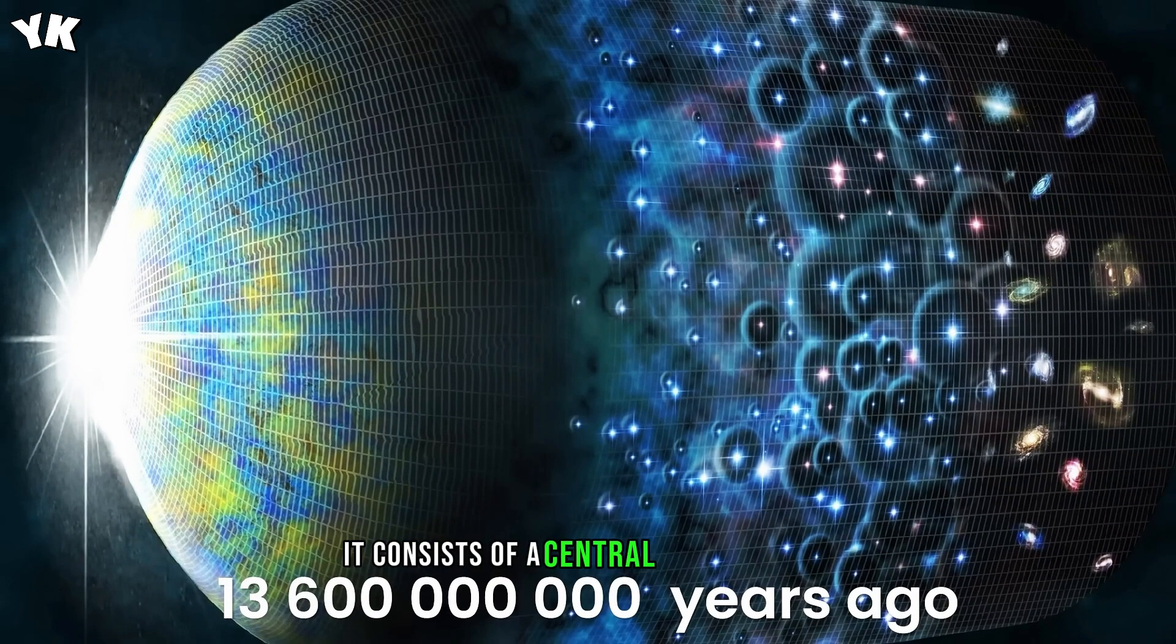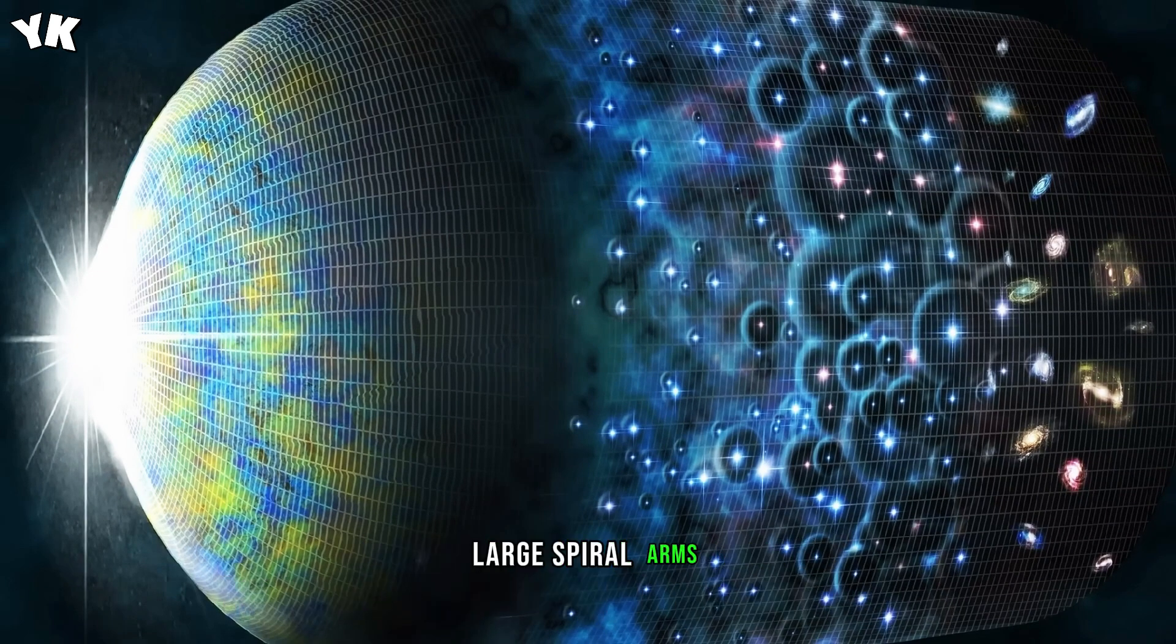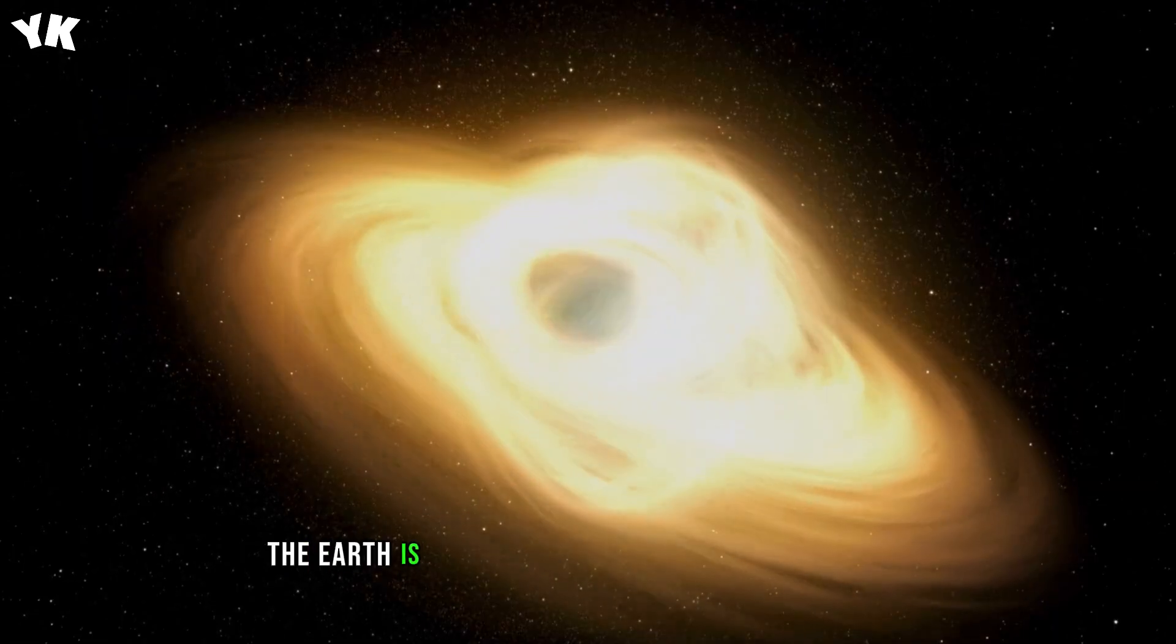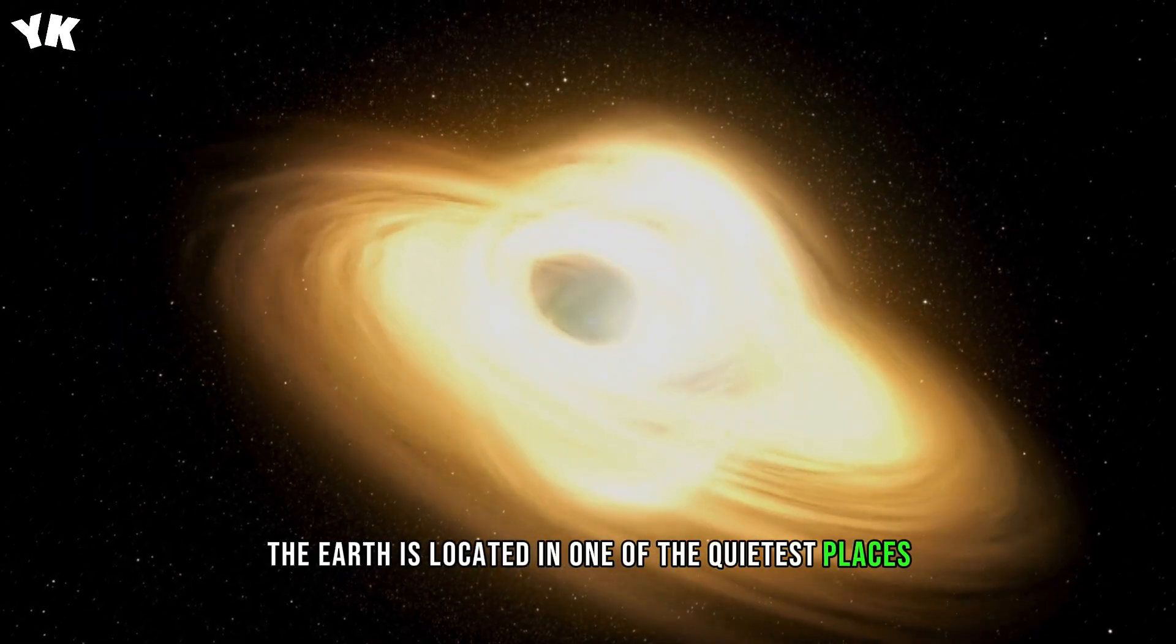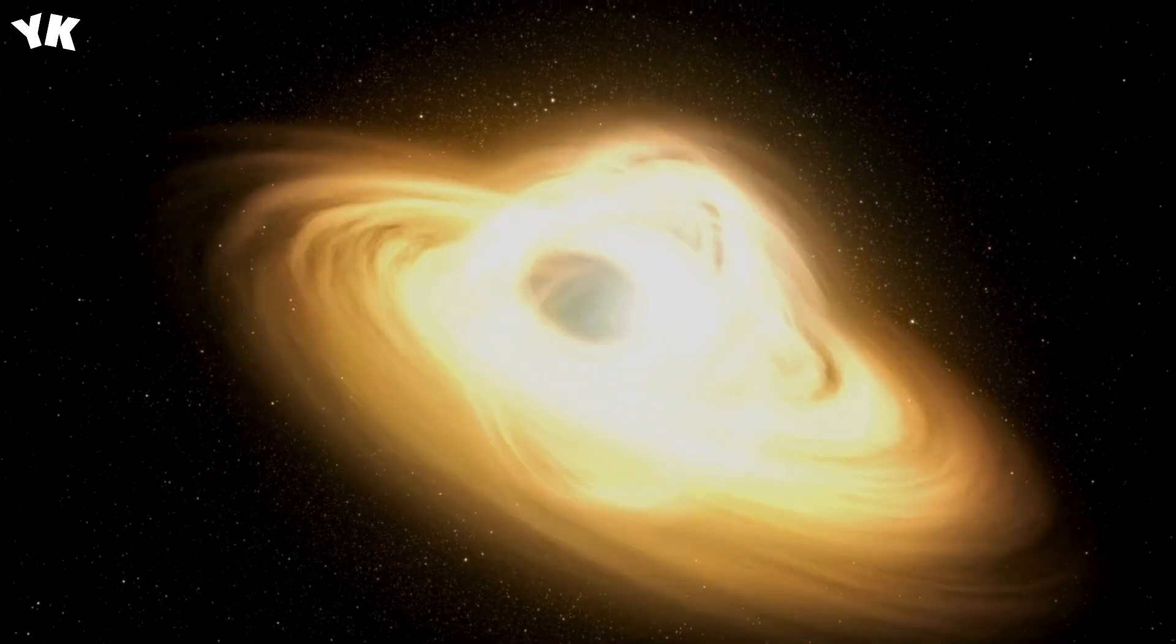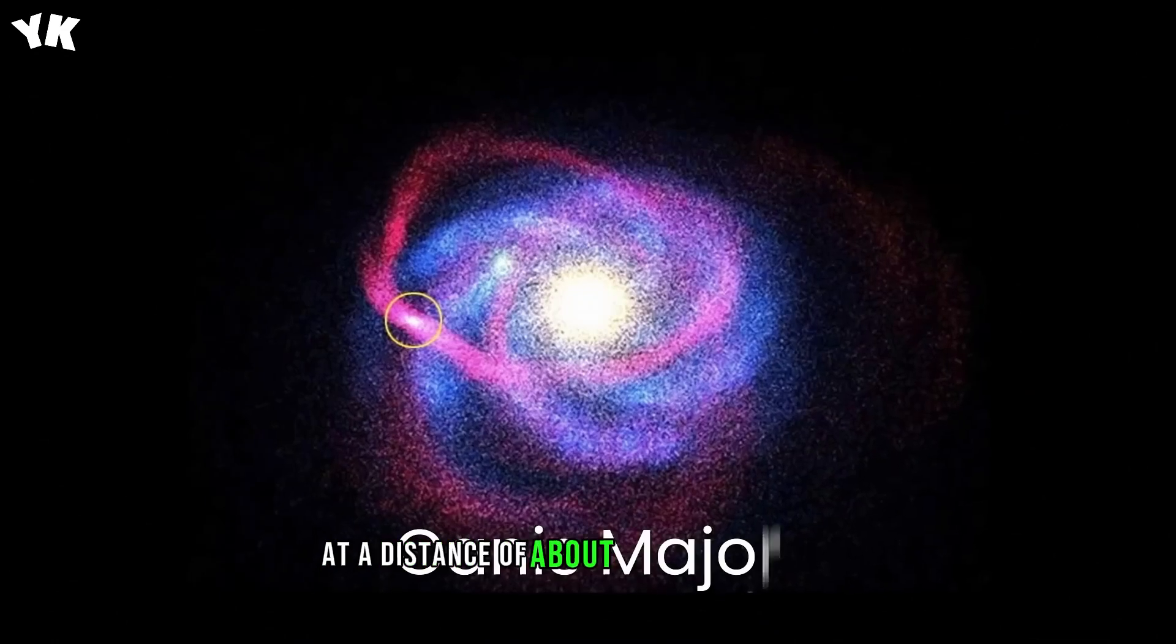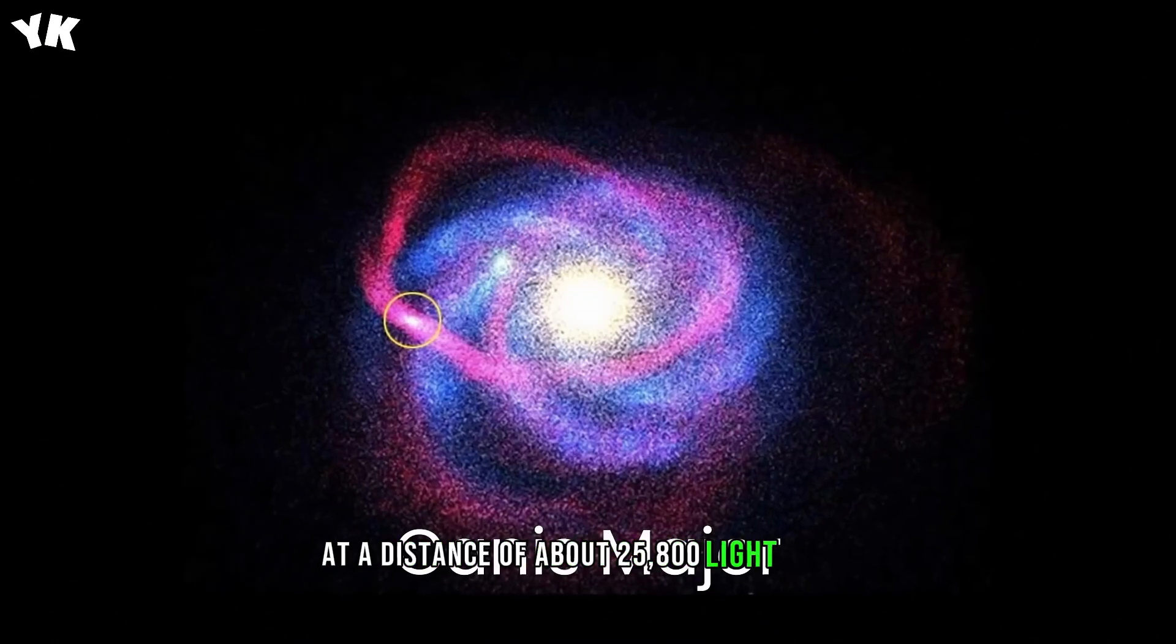It consists of a central part and four large spiral arms, making our galaxy a barred spiral. The Earth is located in one of the quietest places, a small arm of Orion. The center of the Milky Way is located far away from our planet, at a distance of about 25,800 light-years.